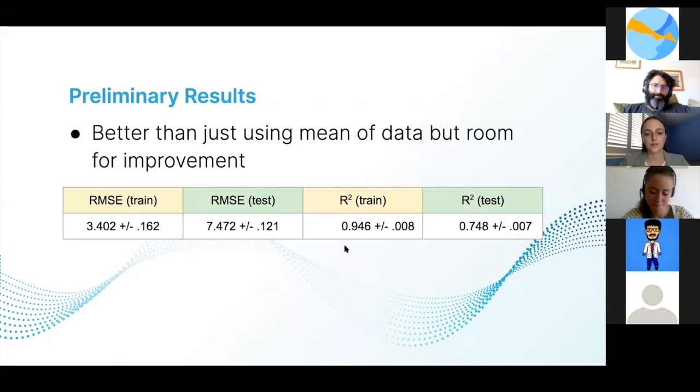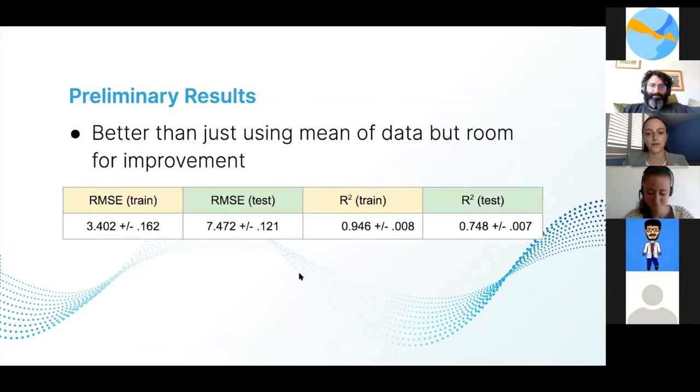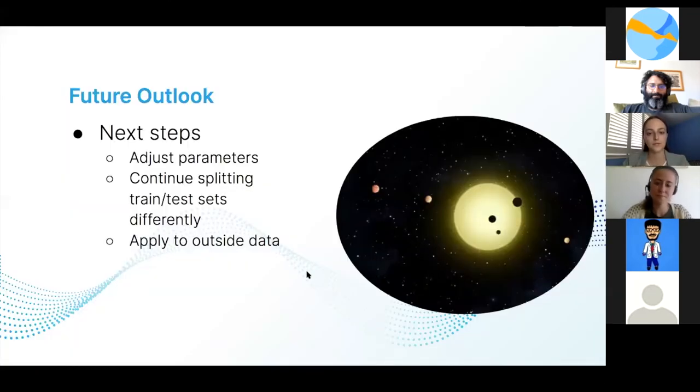The other metric is the R squared value, and we want it to be as close to one as possible. There's quite a big difference here. For the training set, the R squared value is almost one, but for the testing set it's like 0.75, which means we can do better in terms of having the training set be more representative of the testing set. So the next steps are to adjust the parameters of the algorithm to make it better, continue splitting the training and testing sets differently so our predictions become more accurate, and ultimately apply this method to outside data to help us understand planetary processes.